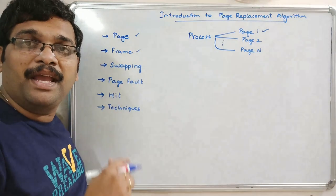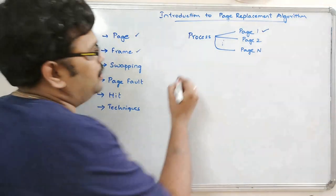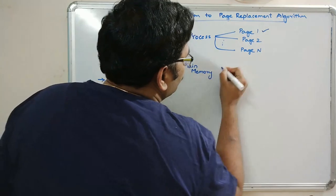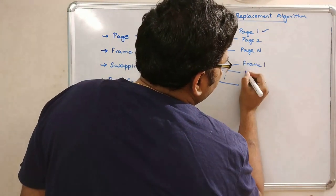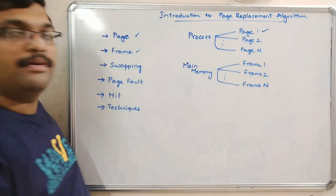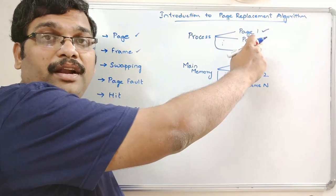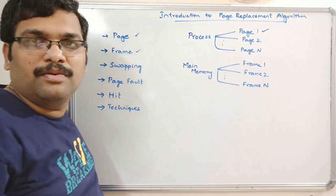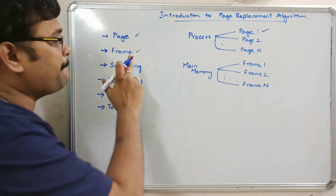Similar to the process, the main memory is also finite and is divided into different frames: frame 1, frame 2, up to frame N. If page 1 is to be executed, page 1 should be loaded from secondary memory into one of these available frames in main memory. A frame is a part of main memory.